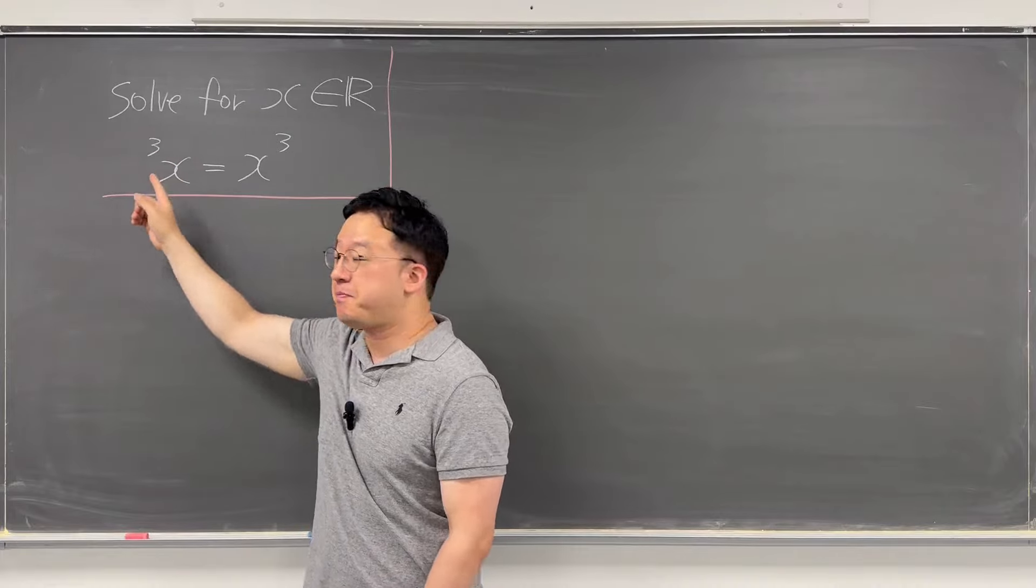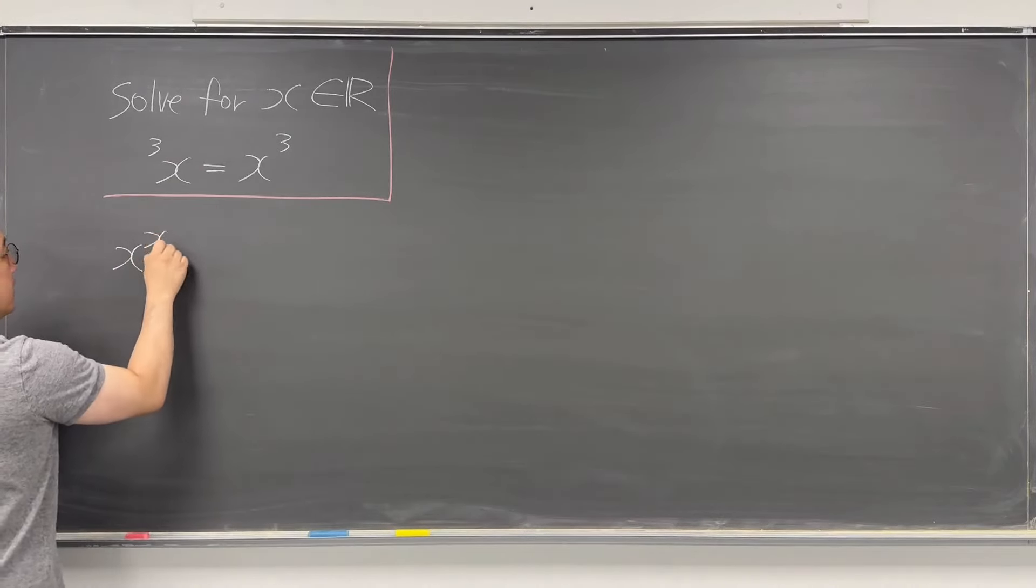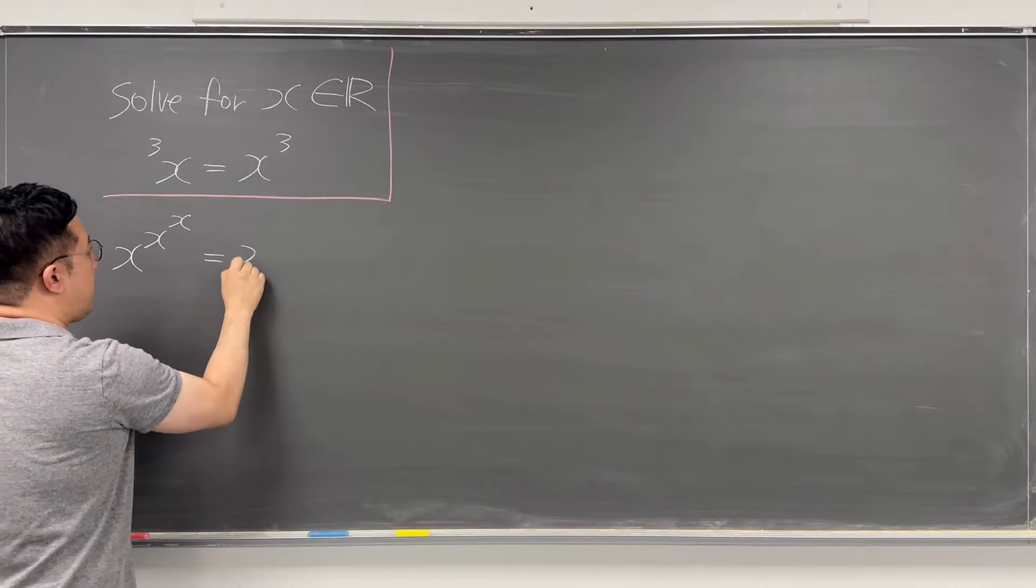For three times. So the left-hand side is the same as x to the power of x, to the power of x. Raising the base to the power with the same term for three times. That is now equal to x cubed.